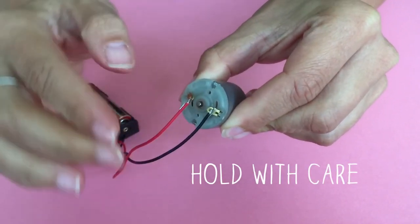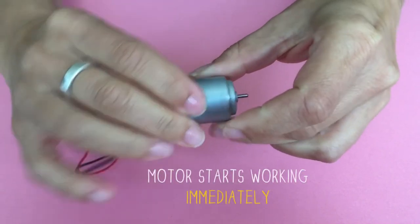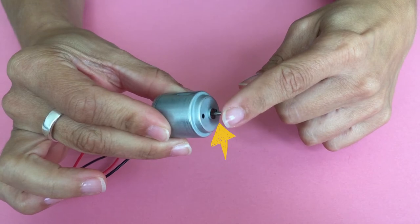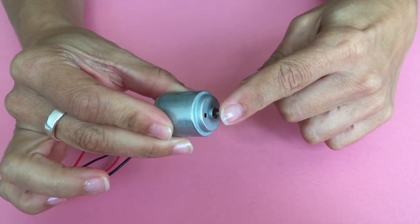Hold the motor with care as it will start to work immediately when the second wire connects with a metal eye. And by carefully placing your finger on the top you'll feel the rotation.